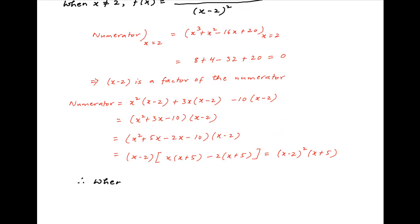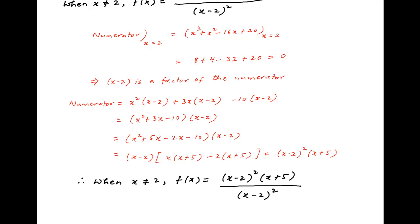Therefore, when x is not equal to 2, the value of f(x) is equal to (x − 2)² times (x + 5) divided by (x − 2)². Now since x is not equal to 2, therefore (x − 2) is not equal to 0. Therefore, we can cancel (x − 2)² across the numerator and the denominator, and f(x) simplifies to x + 5.